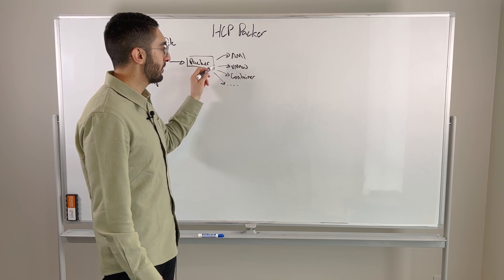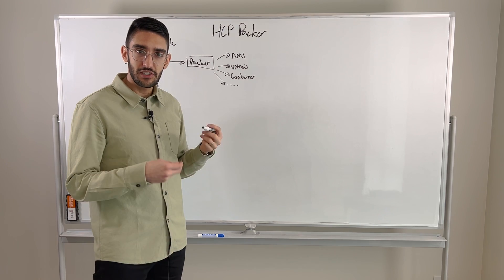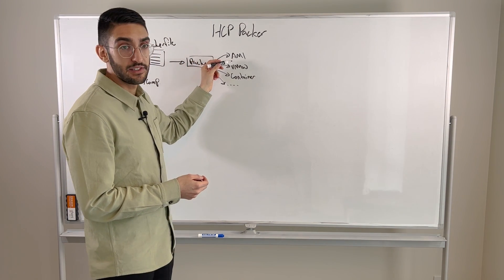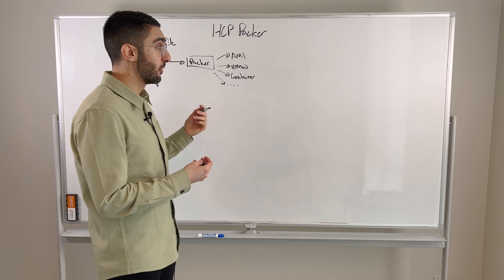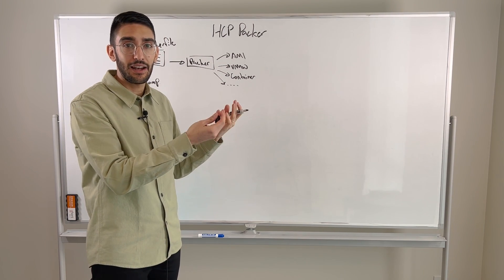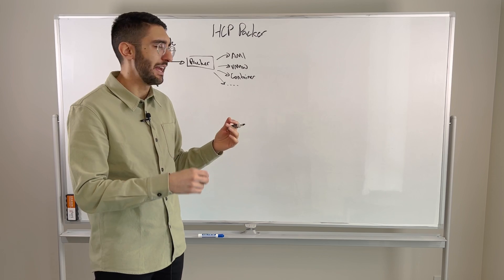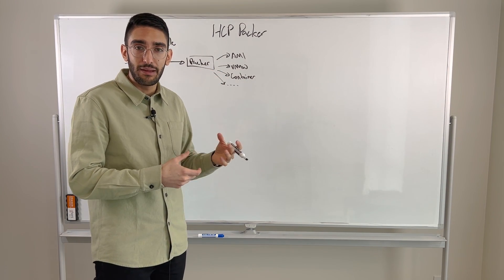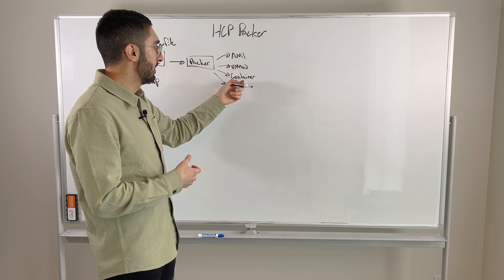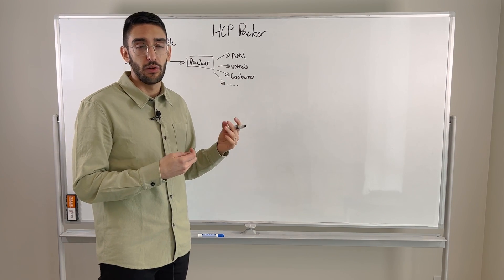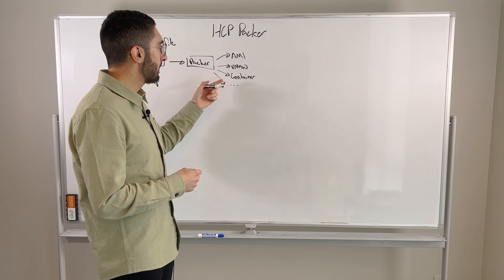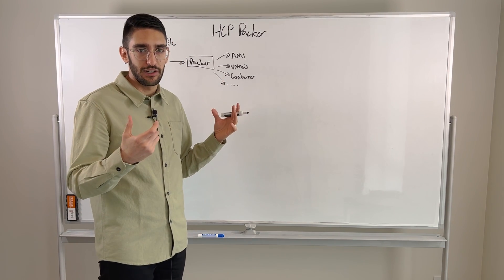Now the challenge is how do we manage all of these images? This is really where HCP Packer comes in. Today we might be generating a set of Amazon machine images and then those get pushed into the AWS catalog. Our VMware images, we might be saving the actual underlying image in a system like Artifactory. Our containers might go into the Docker registry or some other form of a Docker registry. But the challenge becomes how do you manage all the metadata across all this?